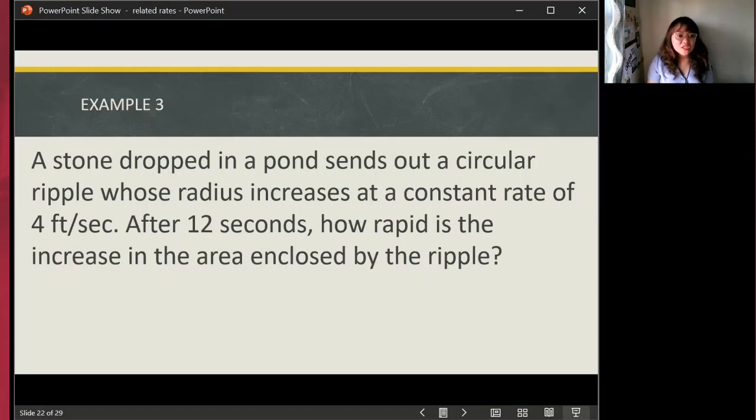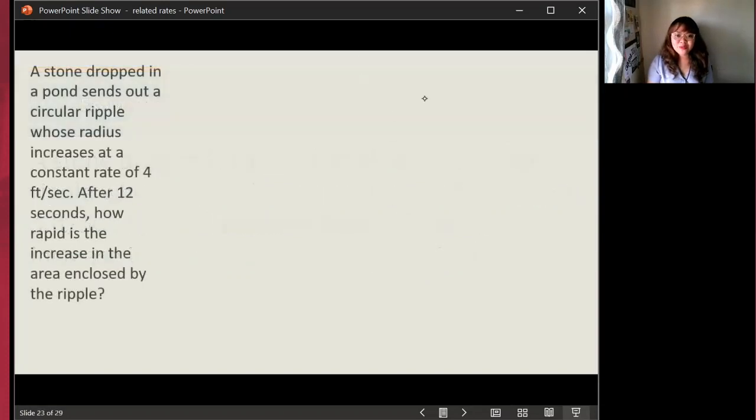A stone dropped in a pond sends out a circular ripple whose radius increases at a constant rate of four feet per second. After 12 seconds, how rapid is the increase in the area enclosed by the ripple? Let's do this little by little. So a stone is dropped in a pond, and it sends out a circular ripple. Let's draw that circular ripple. There we go, we have the circular ripple here.